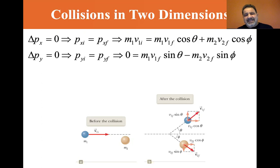So in the X direction, we have M1·V1 initial, that's the only momentum. It equals M1·V1 final times cosine of theta plus M2·V2 final times the cosine of phi. So that's the total momentum.